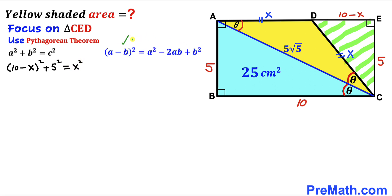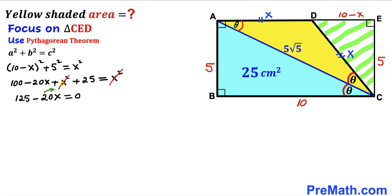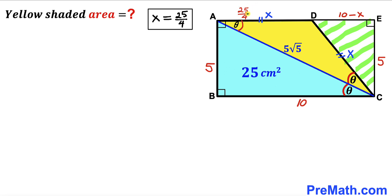Expanding using the identity (a − b)² = a² − 2ab + b²: 100 − 20x + x² + 25 = x². The x² terms cancel, leaving 125 − 20x = 0. Solving: 20x = 125, so x = 125/20 = 25/4. Therefore AD = 25/4 cm.